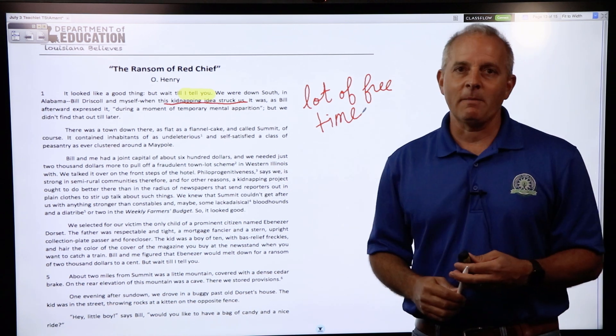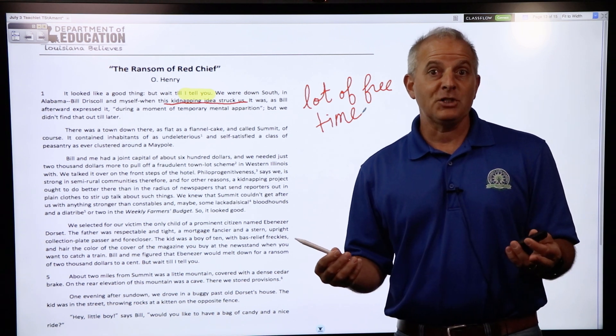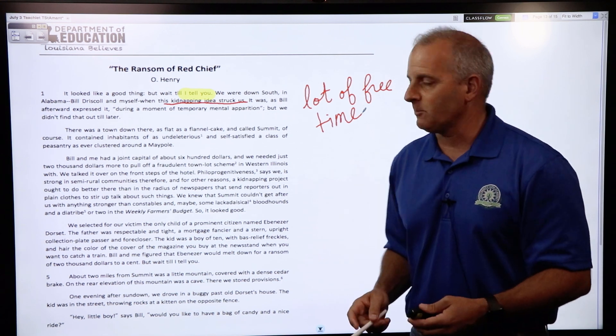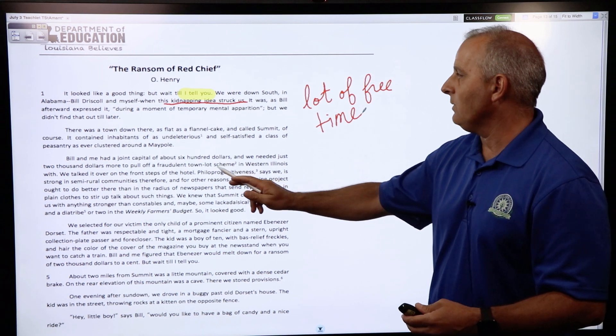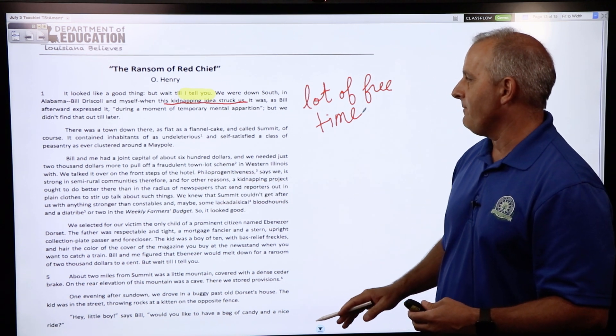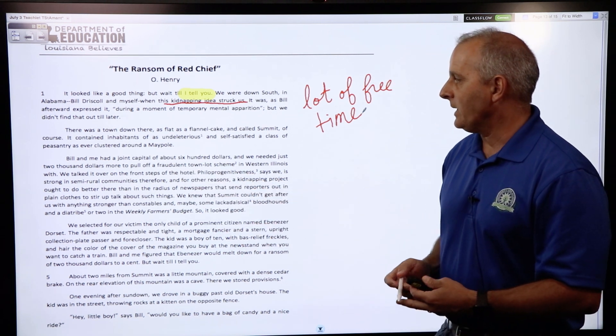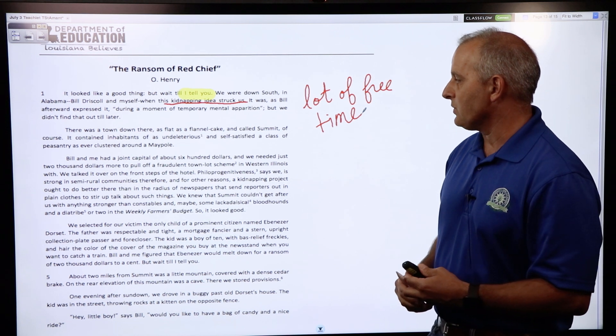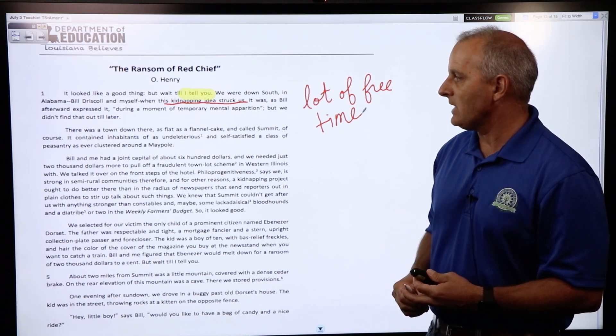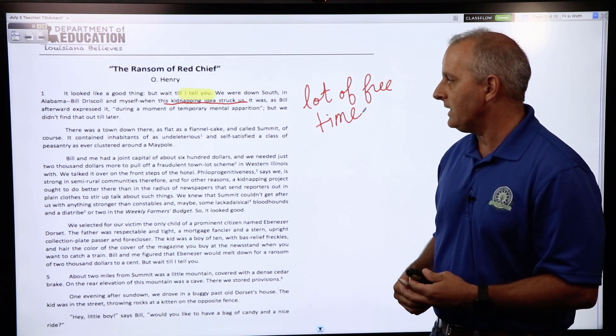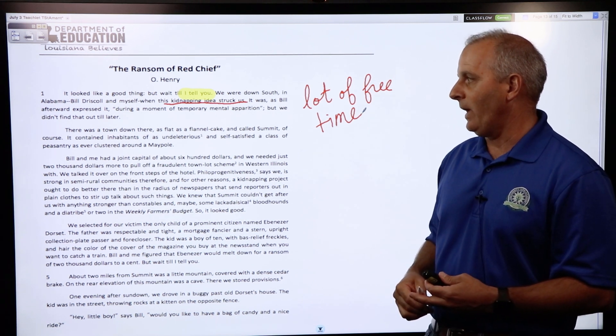Another part of the story that I think says something about the character and maybe their education level, or lack thereof, in this particular case: if we go down to the third paragraph, 'Bill and me had a joint capital of about six hundred dollars, and we needed just two thousand dollars more to pull off a fraudulent town lot scheme in western Illinois with.'